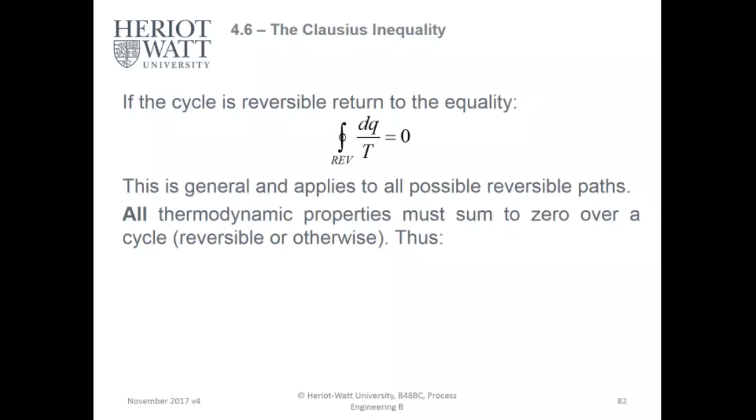If the cycle is reversible, DQ over T equals zero. This is general and applies to all possible reversible paths. All thermodynamic properties must sum to zero over a cycle, otherwise, hence DP equals zero, DV equals zero, DT equals zero, DU equals zero, DH equals zero. This is a principle of thermodynamics and you'll see it over and over in the next couple of years.